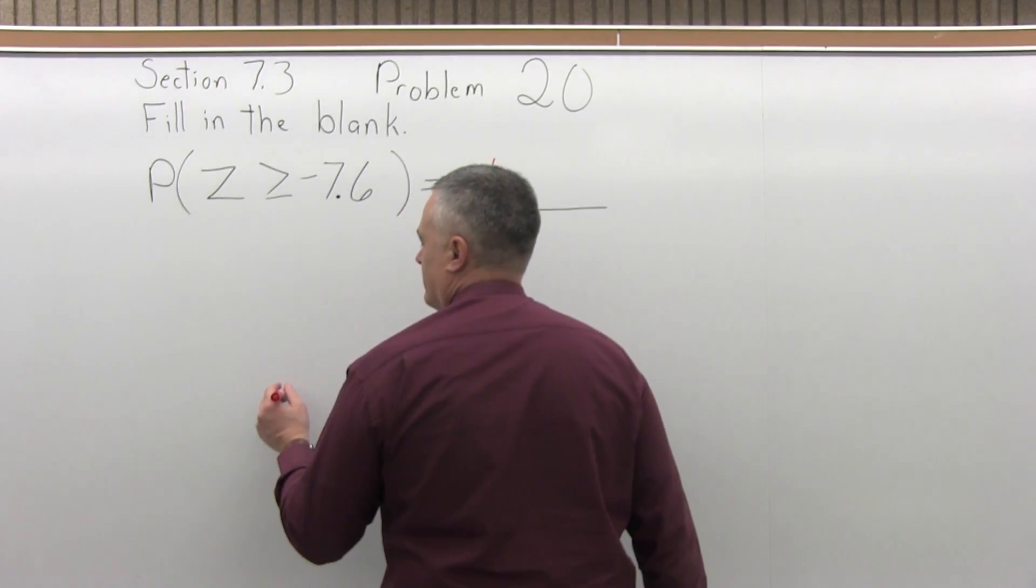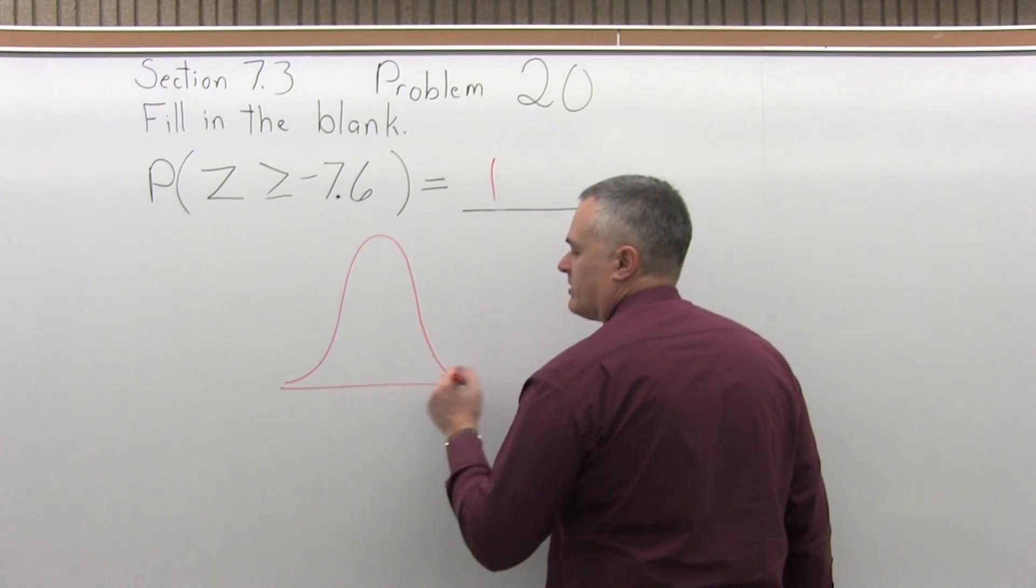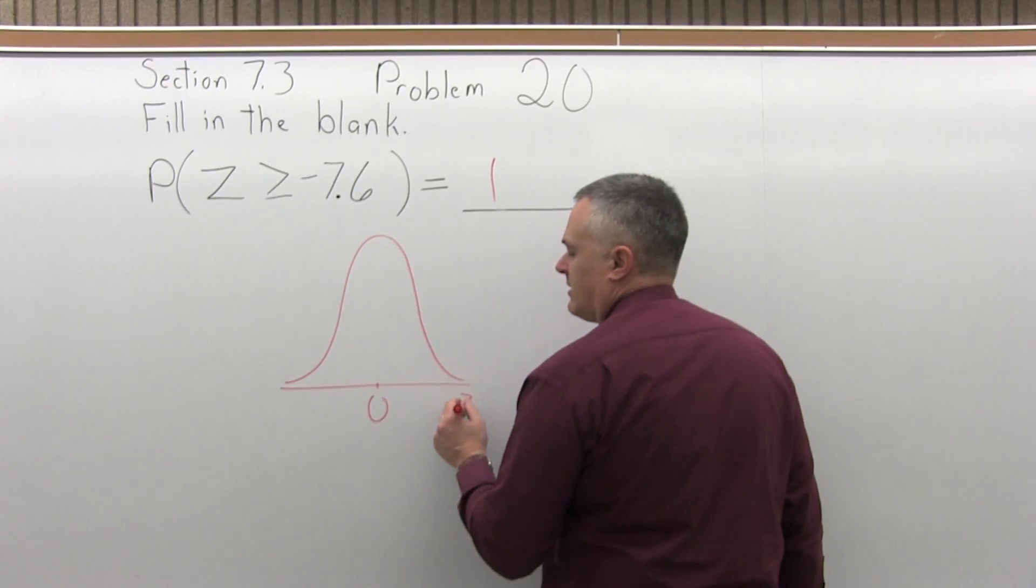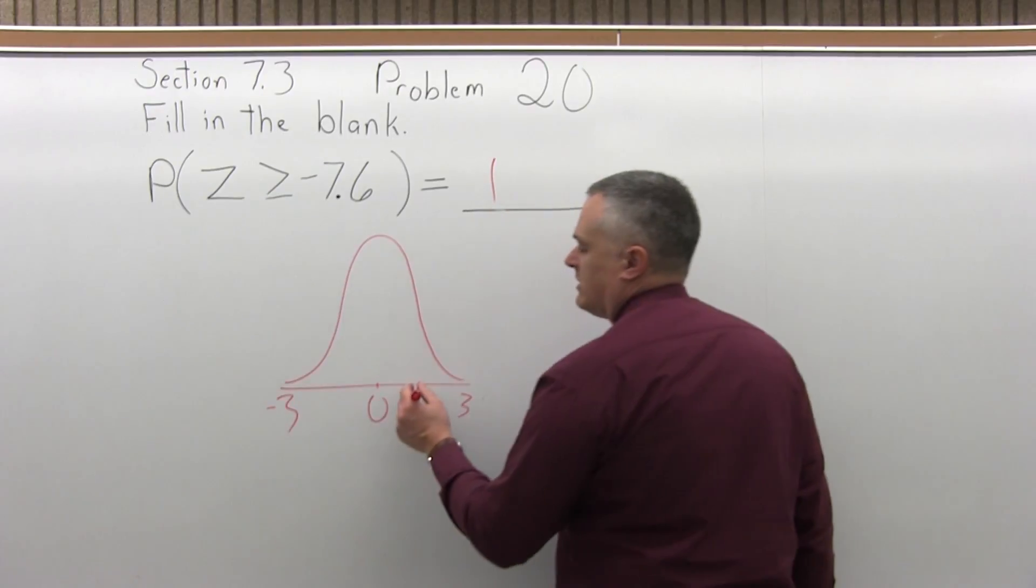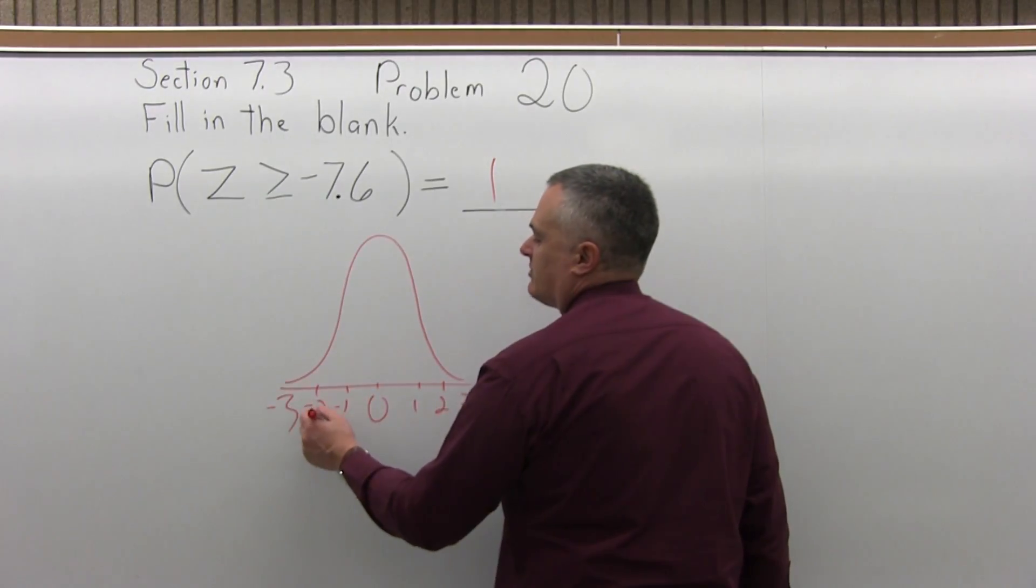So if you look at the bell curve, the way we usually draw it, you put a 0 in the center, 3, negative 3, 1, 2, 3, minus 1, minus 2, minus 3.